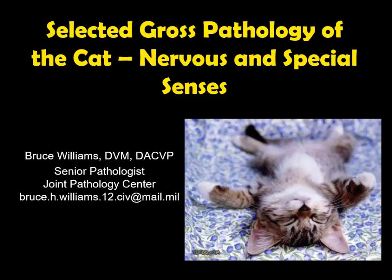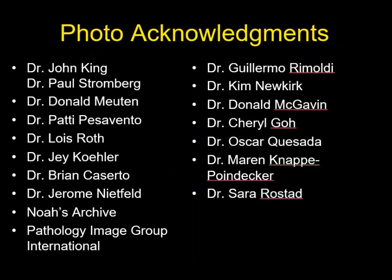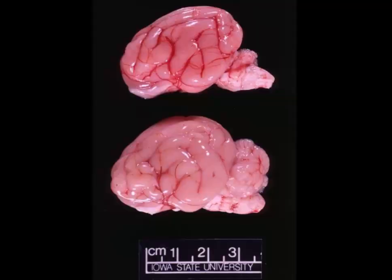Well hello, it's Bruce Williams again and today I want to present part six of my series on the Selected Gross Pathology of the Cat. We're going to talk about the nervous system as well as the organs of the special senses. Before I do, I want to thank all my friends and colleagues who over the years have provided me these great images which allow me to put these lectures together.